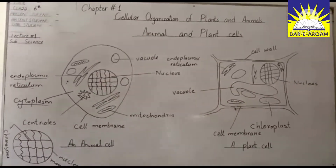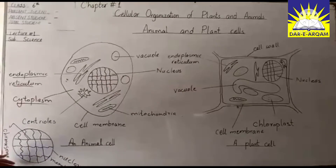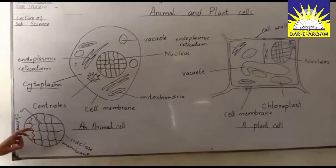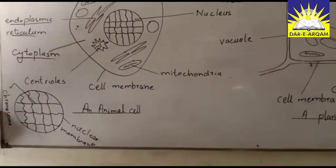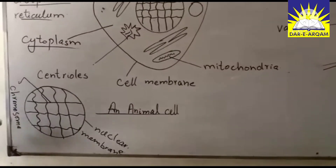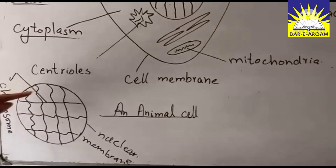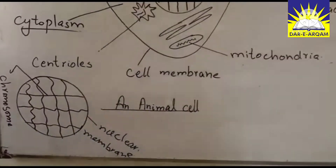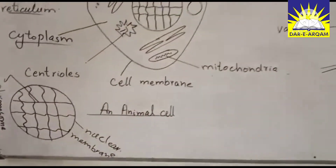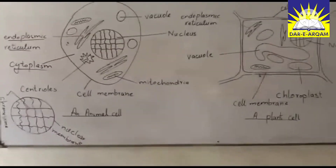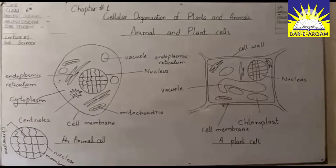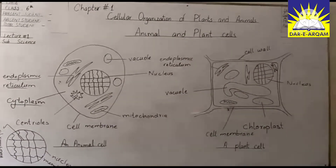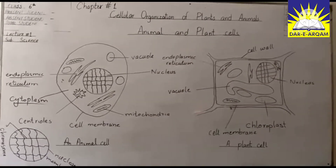If you look at the nucleus, you can see the structure of the nucleus. The third structure of the nucleus is the chromosome, and the outer covering is the nuclear membrane.